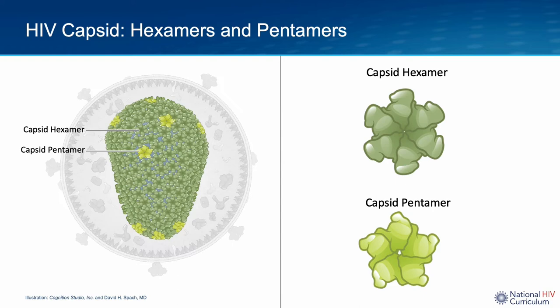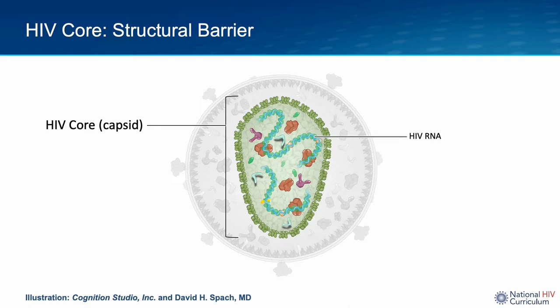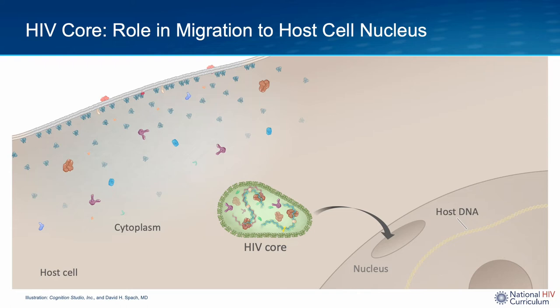The fully formed HIV core has a cone-shaped structure that contains about 250 hexamers and 12 pentamers. The HIV core provides a structural barrier that sequesters and protects the HIV RNA and key enzymes and several of the accessory proteins. During viral replication inside the host cell, the primary role of the HIV core is to deliver the contents within the core from the cytoplasm to inside the host cell nucleus.